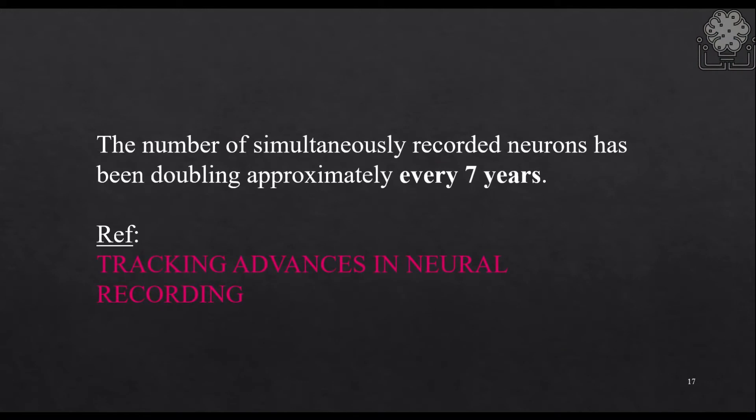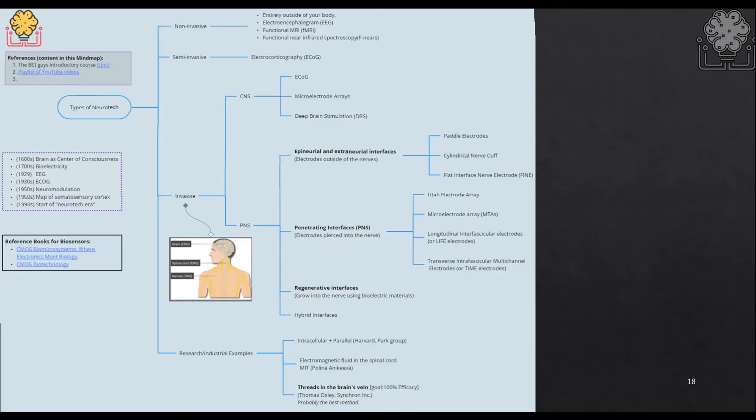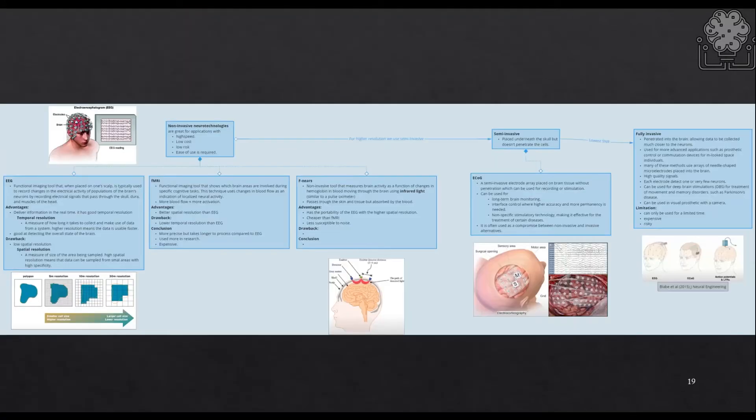The number of symmetry recorded neurons has been doubling approximately every seven years. There's a reference for that, the link is available on the mind map. But depending on where we want to do the interface, we do it invasively, non-invasively, semi-invasively, or other types of compatibility which is biocompatible. They are still under development but the ones that are practical are these.